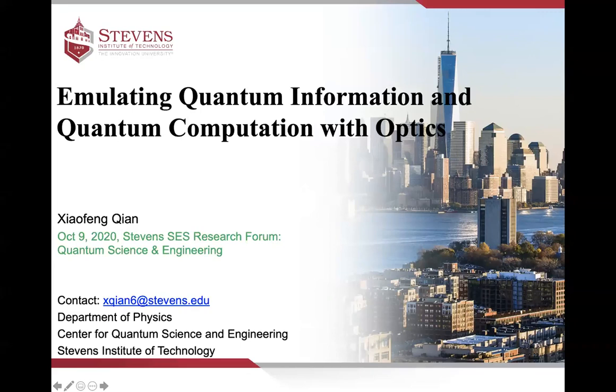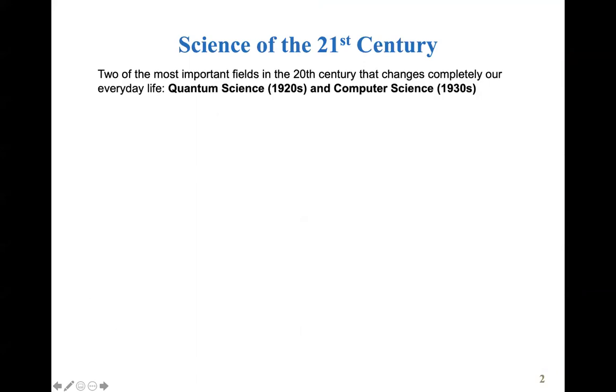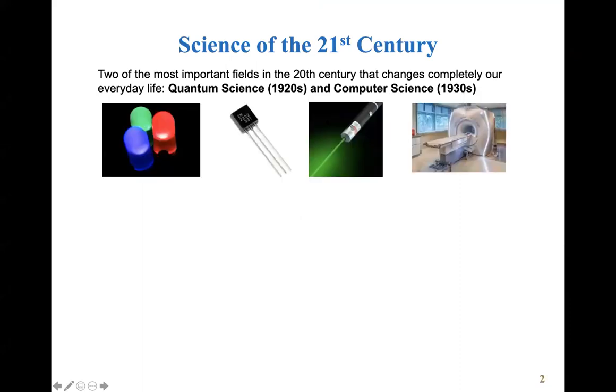That's another type of connection here. As we know, in the last century, two of the most successful and important fields that have been developed that have changed our life completely are quantum science, mostly developed in the 1920s, and computer science since the 1930s. All the devices or products that we use every day now, electronically, optically, magnetically, or chemically, lots of devices are all a result of quantum mechanics. Otherwise, these devices won't exist at all.